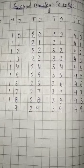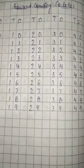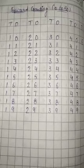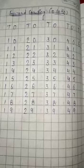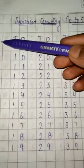Hello students, how are you all? Hope you are fine. I am also good. Today we are going to learn forward counting, zero to fifty. Now let's start. What is this? O means ones. TO means tens and ones. Now start: zero, one, two, three, four, five, six, seven.